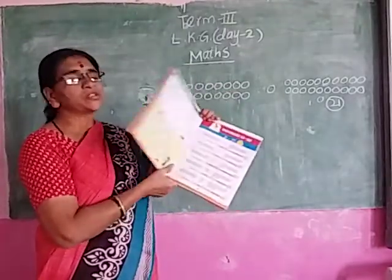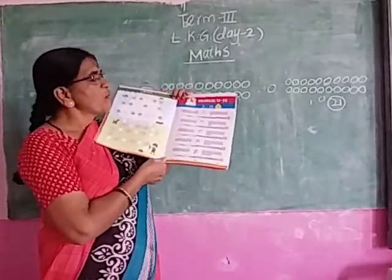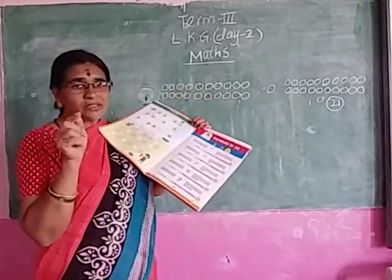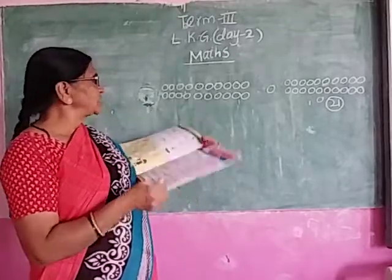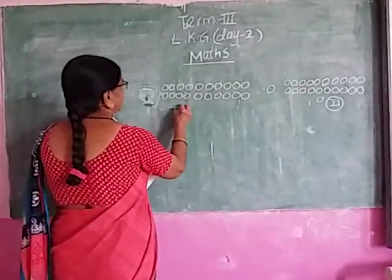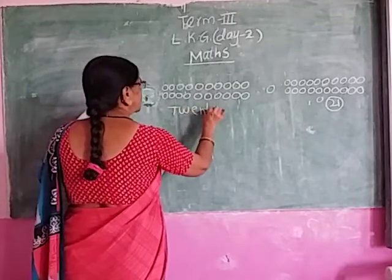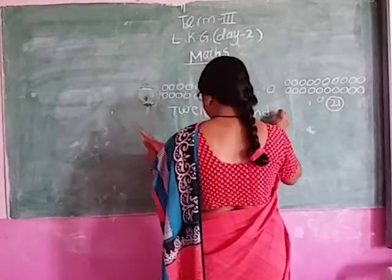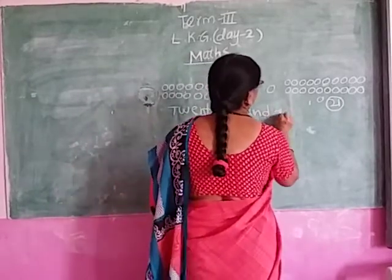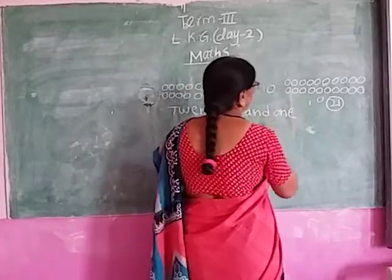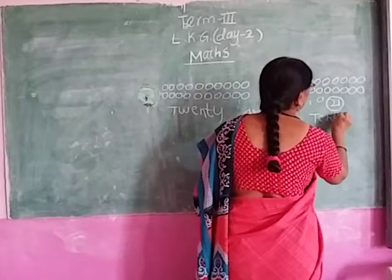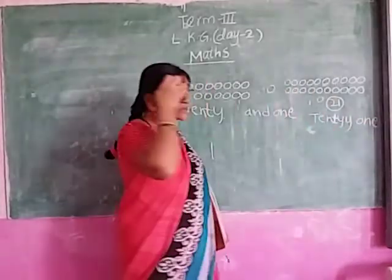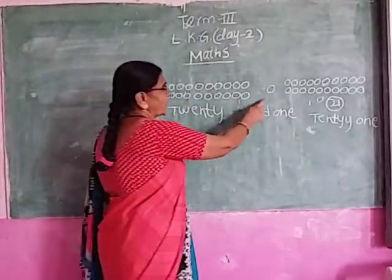How many numbers are there? 21 to 25. Okay children, practice at home like this. We also draw on the plate and count. 20 and 1 — 21. E, W, N, T, Y. 21. Like this. 20 and 1 — 21.